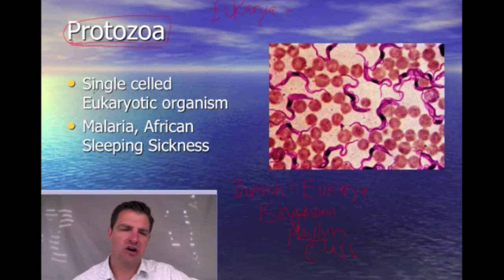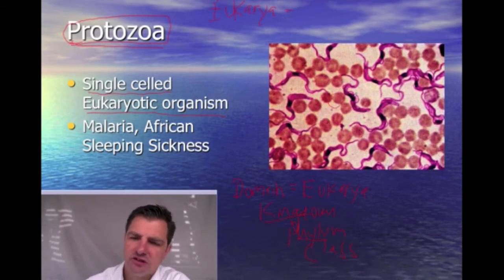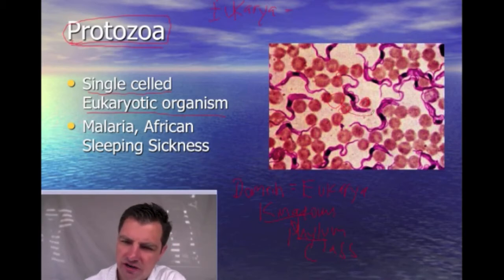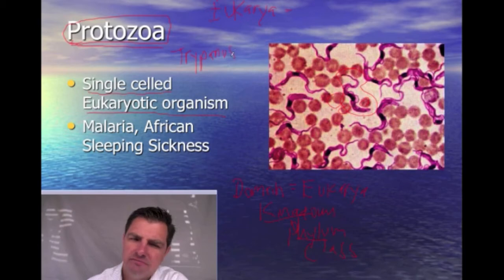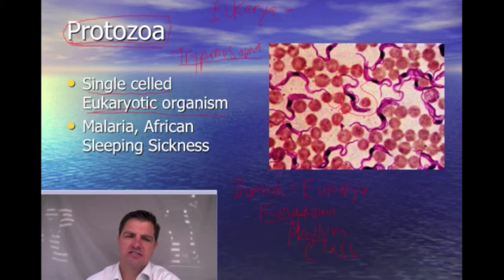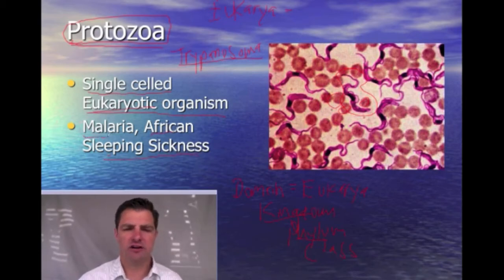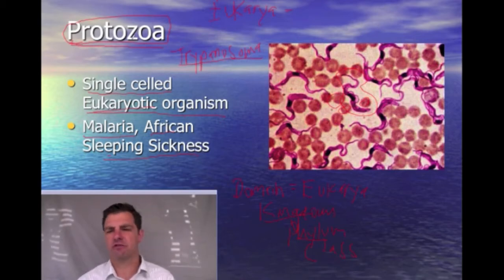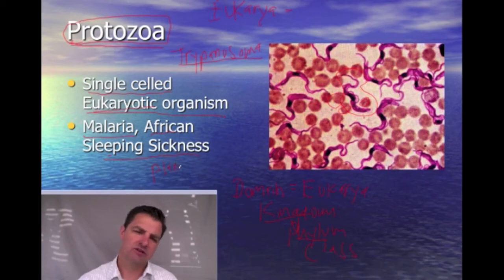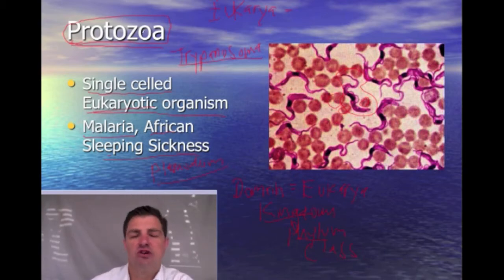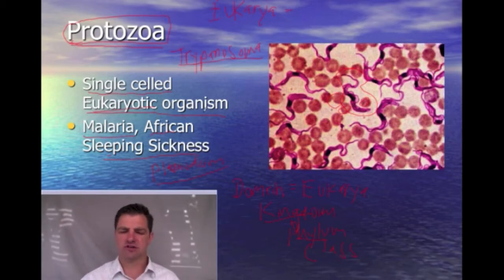Protozoa are what we call, for this class, the single-celled eukaryotic organisms. For example, these are red blood cells found in your body, but this organism here is called Trypanosoma — a eukaryotic cell that causes African sleeping sickness. Malaria, which you've probably heard of, is also caused by a protozoan called Plasmodium. Those are two common eukaryotic disease-causing organisms. Most protozoa live in freshwater ponds and are not pathogens or harmful — I just want to give you a little survey of a couple of them.